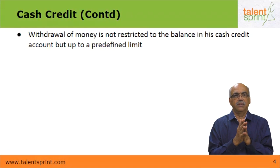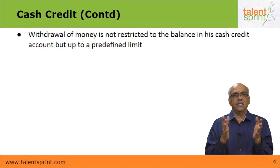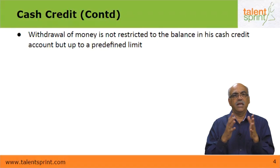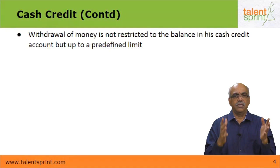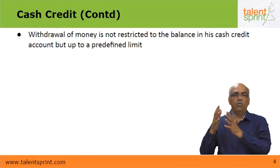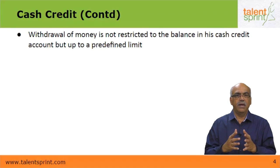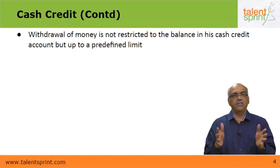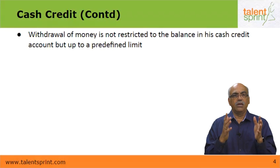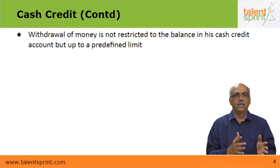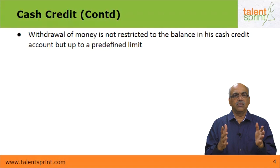The bank assesses the needs of the customer through the credit appraisal system — what is the customer eligible for, what is his line of activity, what are his raw material requirements, how much stock will he have, and what will be the amount of receivables at any point in time. Taking all these factors into account, the bank sets a predefined limit valid for one year from the date of sanction. That is called the working capital limit.